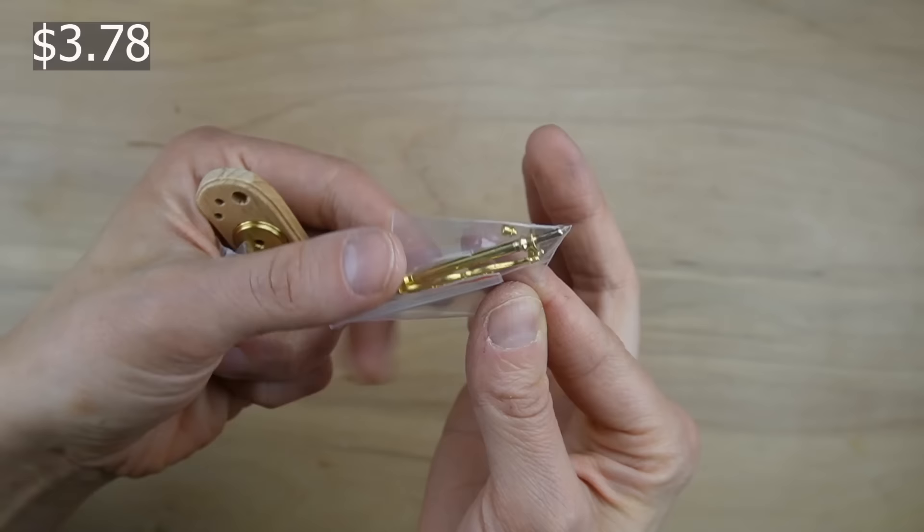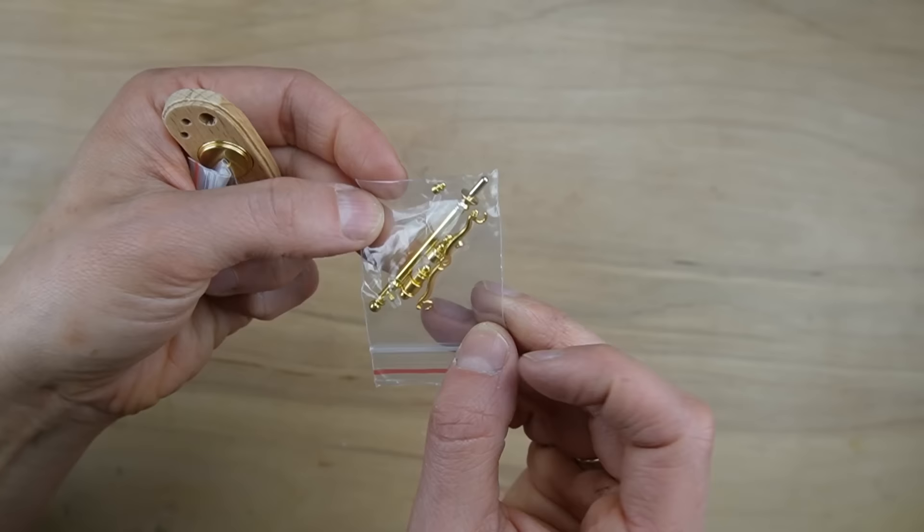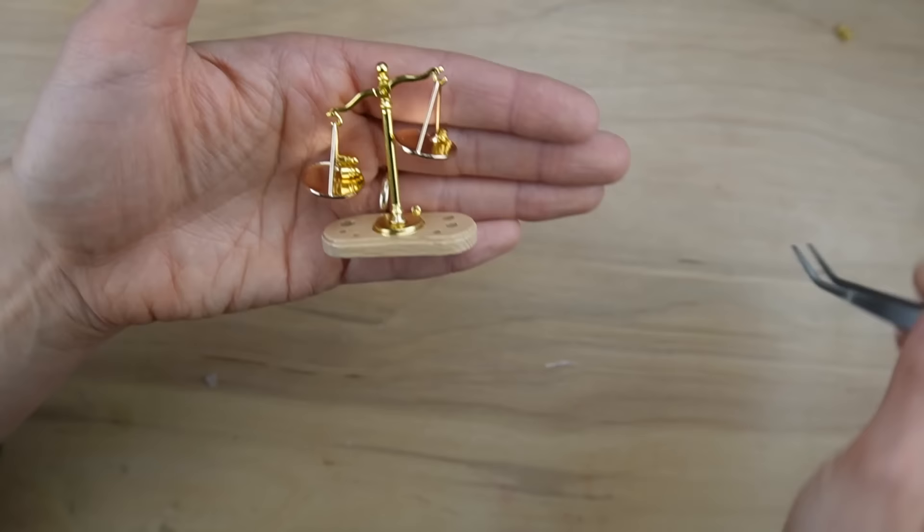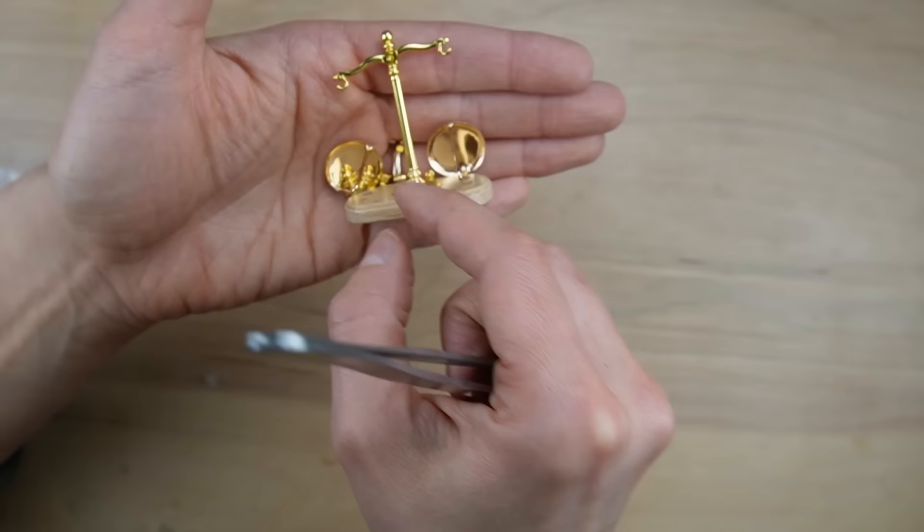I really love the quality and size and all the pieces included in this fancy little scale. It comes in a bag and a few pieces, but it's pretty obvious how to assemble it. It comes with six weights and they can be stored in the little holes at the bottom of the stand.